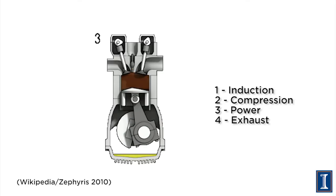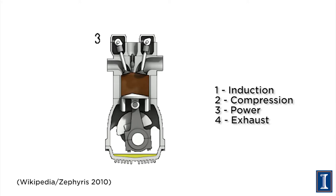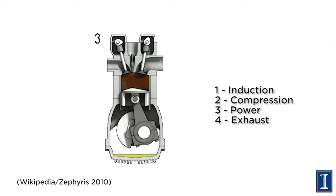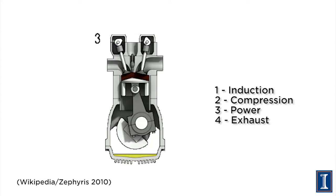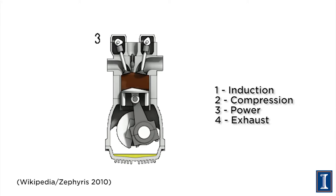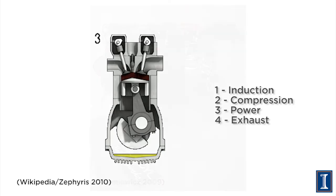So we have the cylinder compressed. Both valves are closed — they have to be closed during the compression stroke, otherwise you'd just push the gas back out. The spark plug goes off — boom — you get another power stroke. Four different cycles: that's a four-cycle engine.